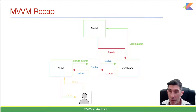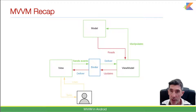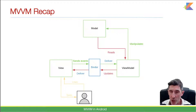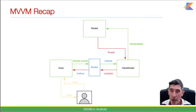At a high level, the Model and View are totally decoupled — no interaction whatsoever — which is a big plus for the pattern. The View is also decoupled from the ViewModel, which is a plus for testing and scalability.